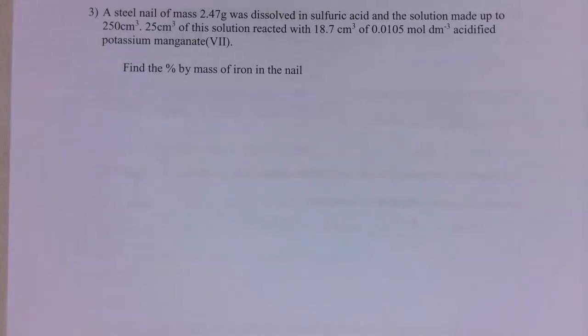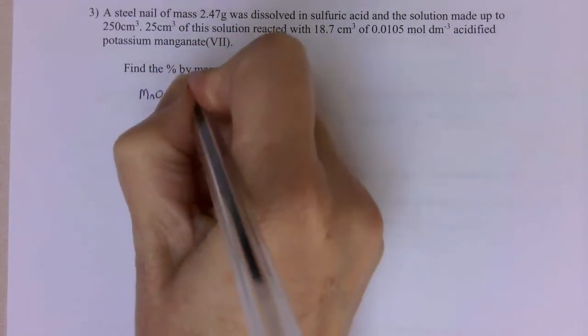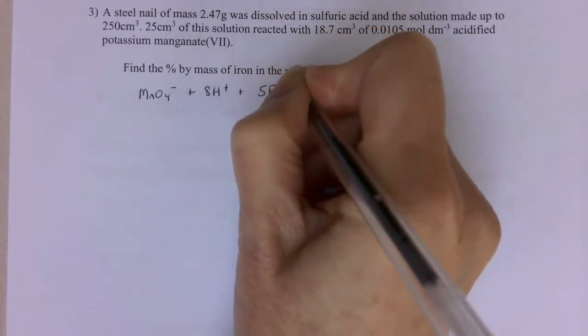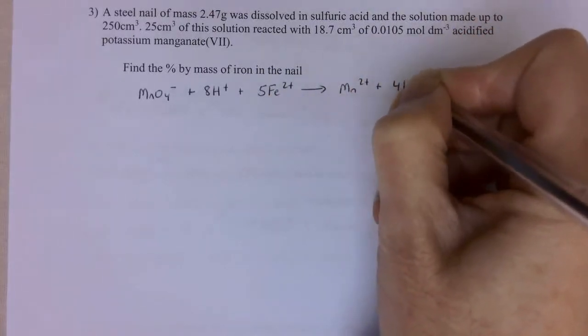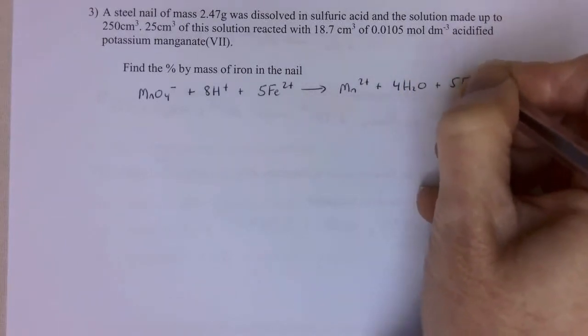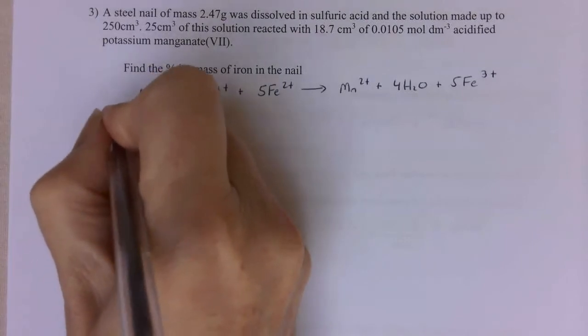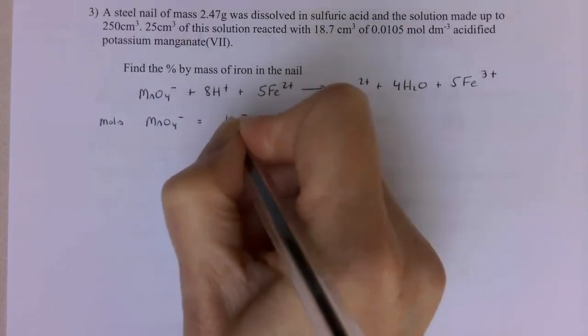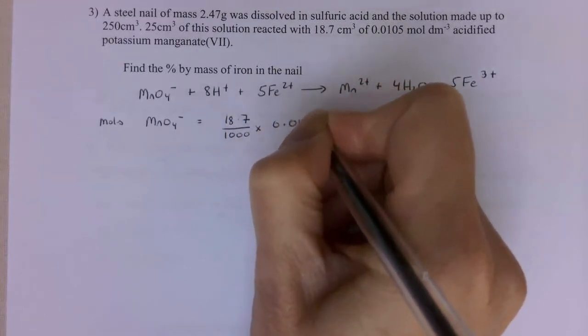So the first thing I'm going to start with is my balanced equation, because I need that for my ratios. Now, it's the same as the one in example 1, so I'm just going to write that out. So I've got MnO4-, plus 8H+, plus 5Fe2+, going to Mn2+, plus 4H2O, plus 5Fe3+. That manganate one is quite a useful one just to learn, because it comes up so often. So I've got moles of MnO4- is my volume, 18.7, divided by 1,000, times by my concentration, 0.0105. So that is working out as 1.9635 times 10 to the minus 4 moles.